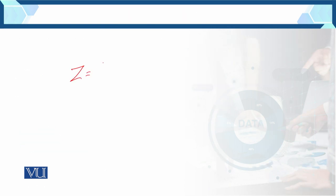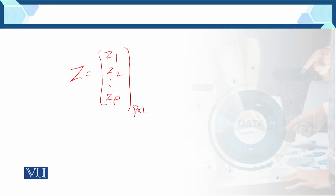This vector z equals [z1, z2, ..., zp], which we have denoted as z. Now what order is this vector? How many rows? It is p×1 — p rows and 1 column.